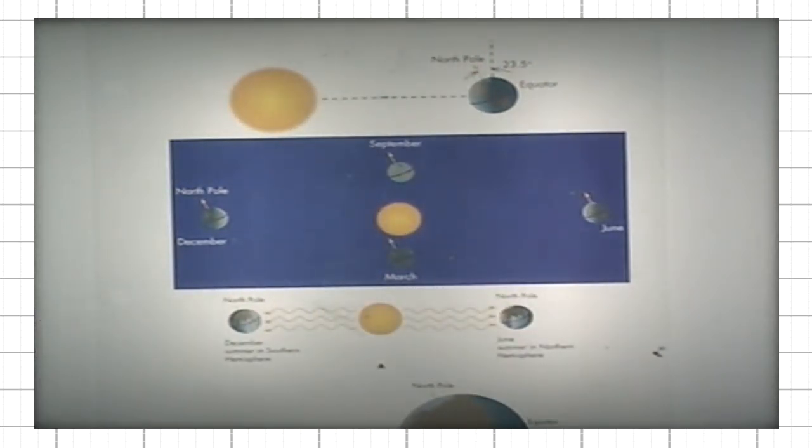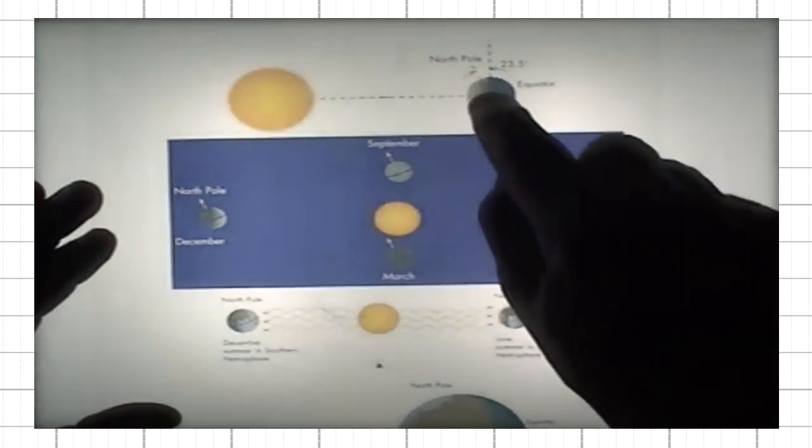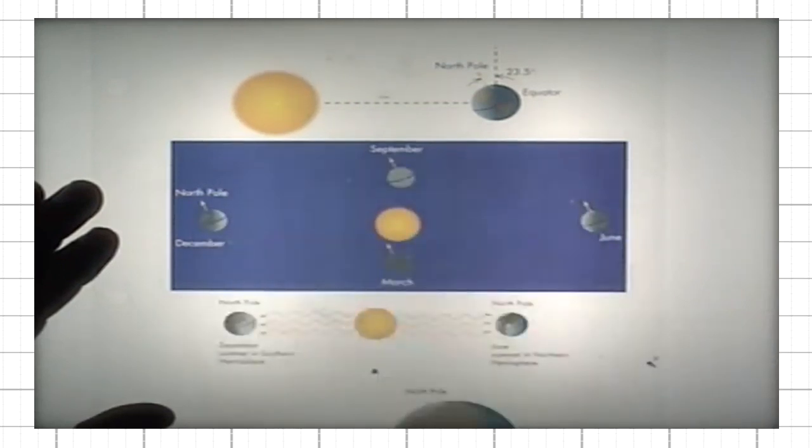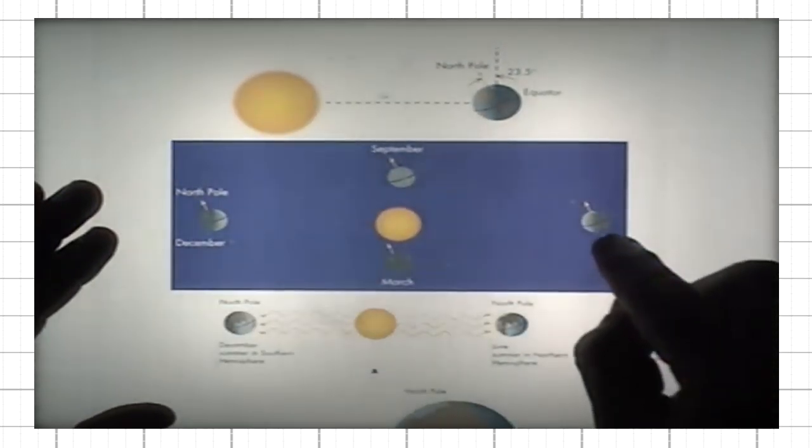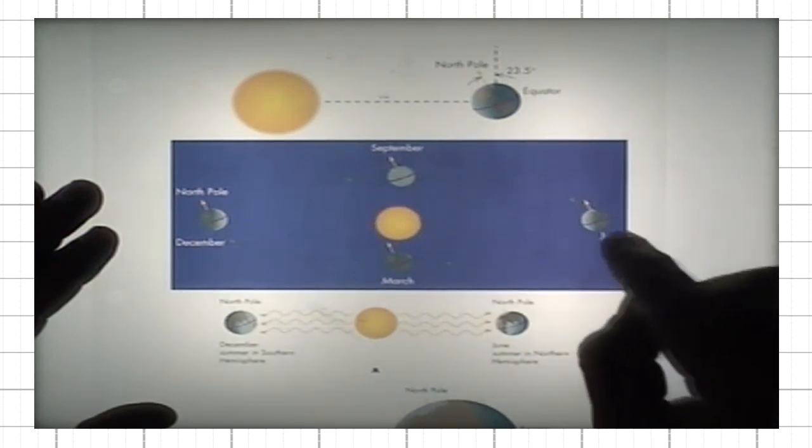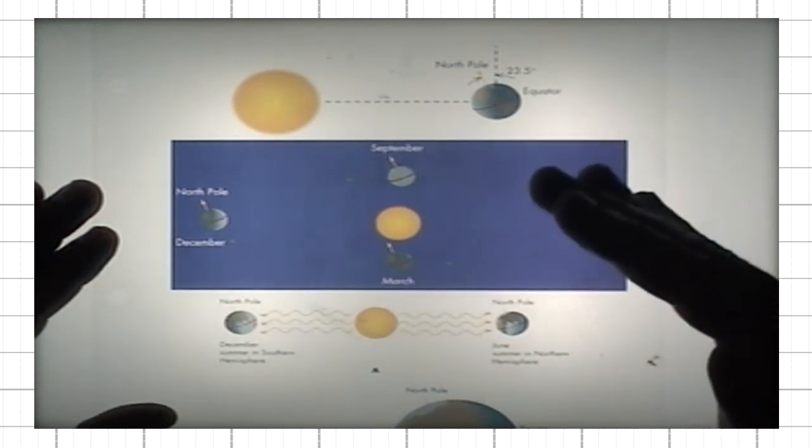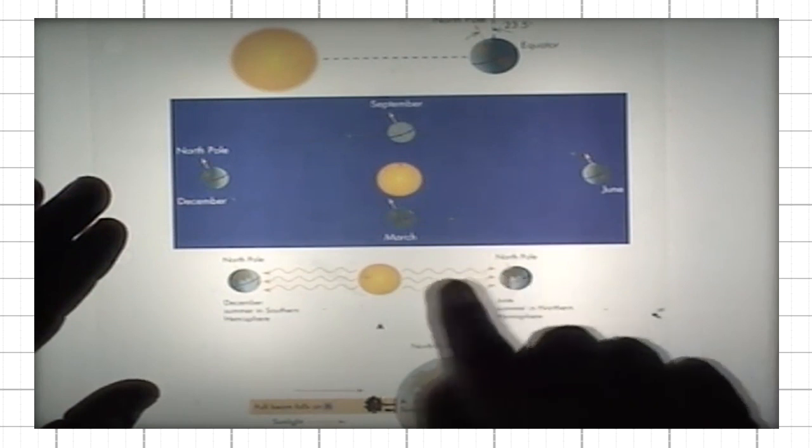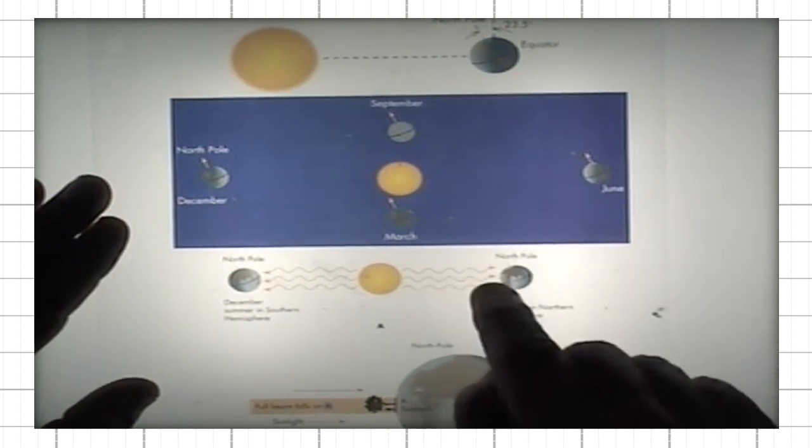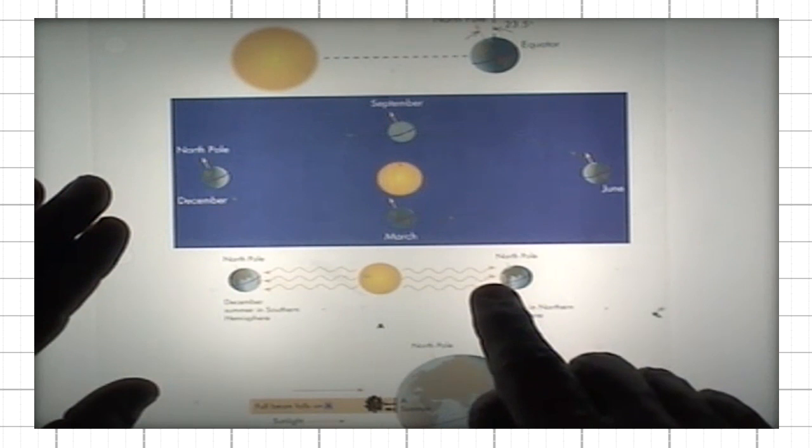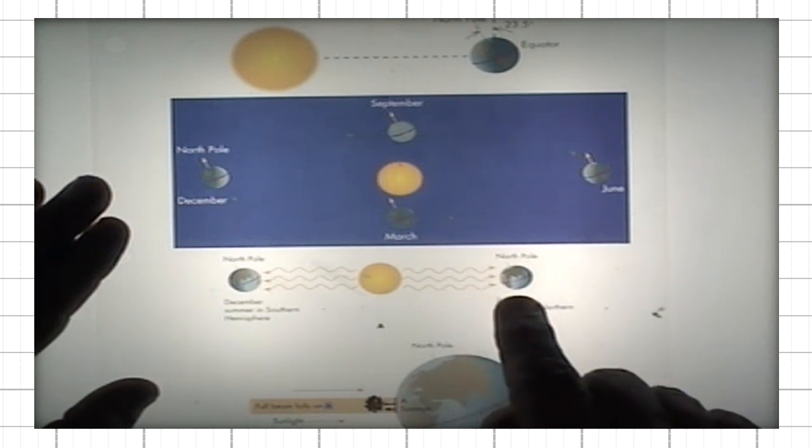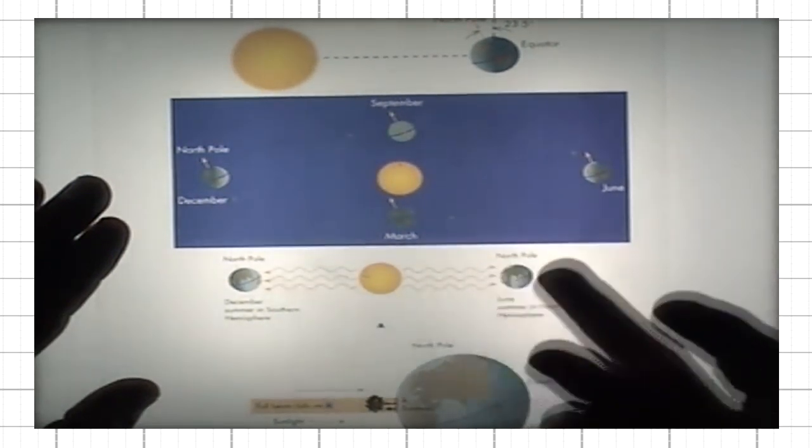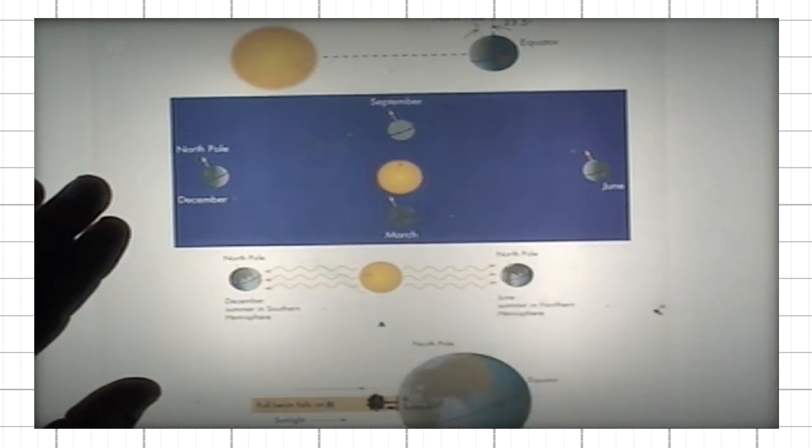The reason for the seasons is that the Earth's rotational axis is tilted relative to the perpendicular to its orbital plane. For instance, in June, the North Pole is tilted more strongly towards the sun, so that at that time, the Northern Hemisphere receives more direct sunlight than the Southern Hemisphere. As a result, the temperatures in the Northern Hemisphere go up and are higher during the summer.